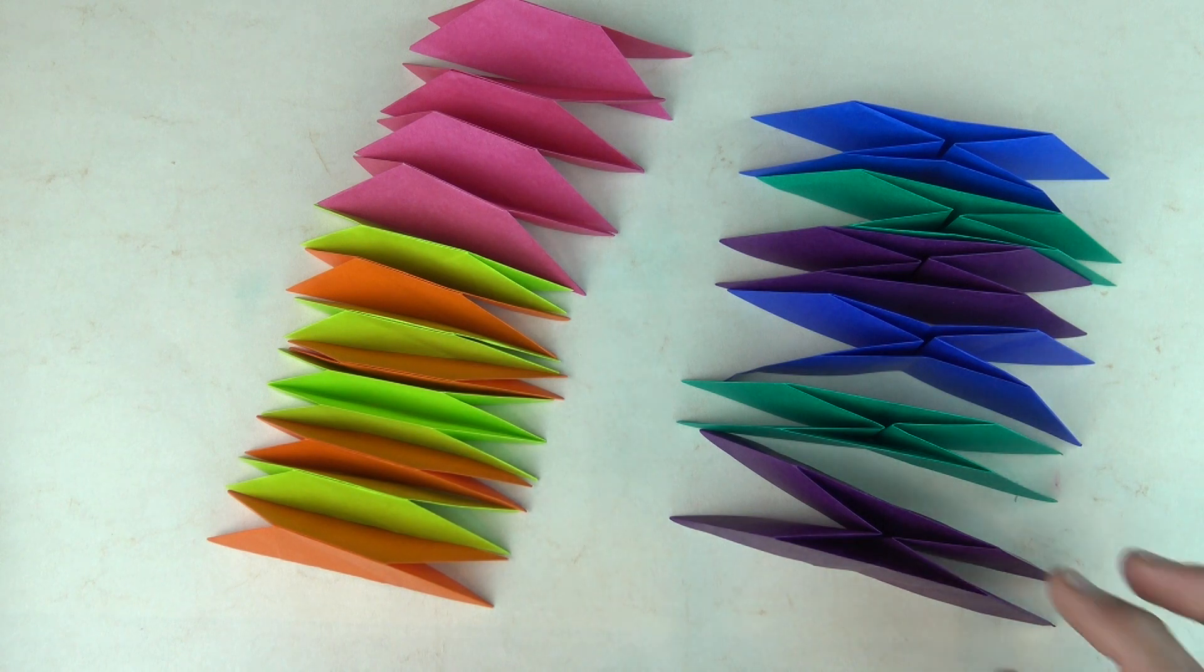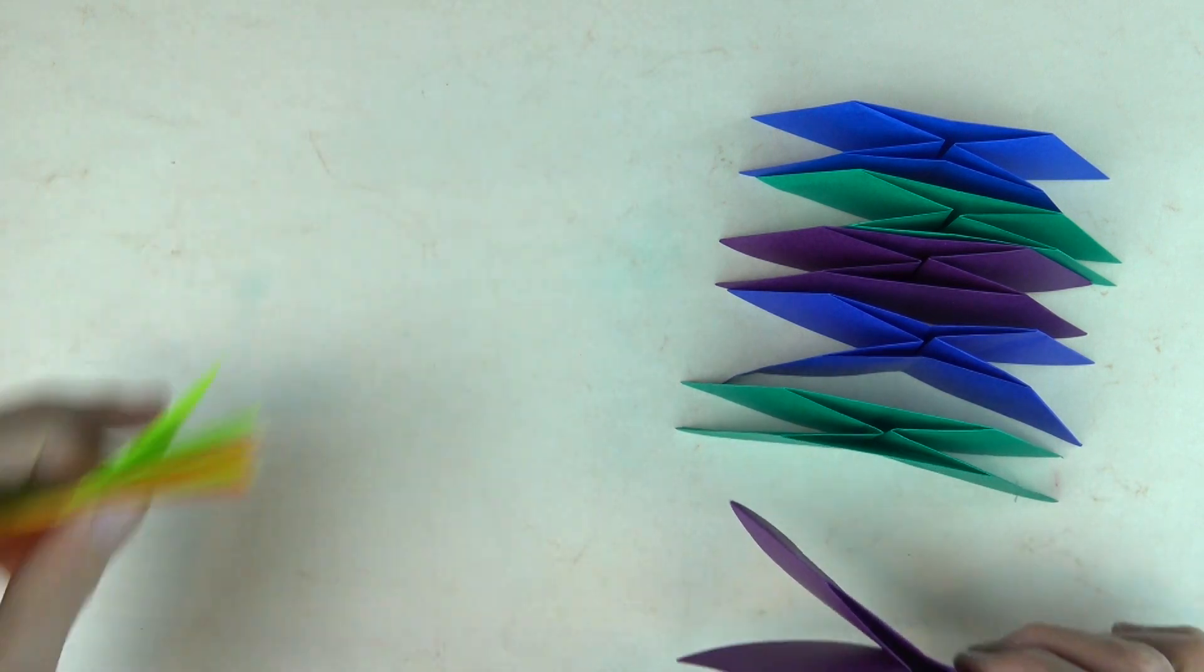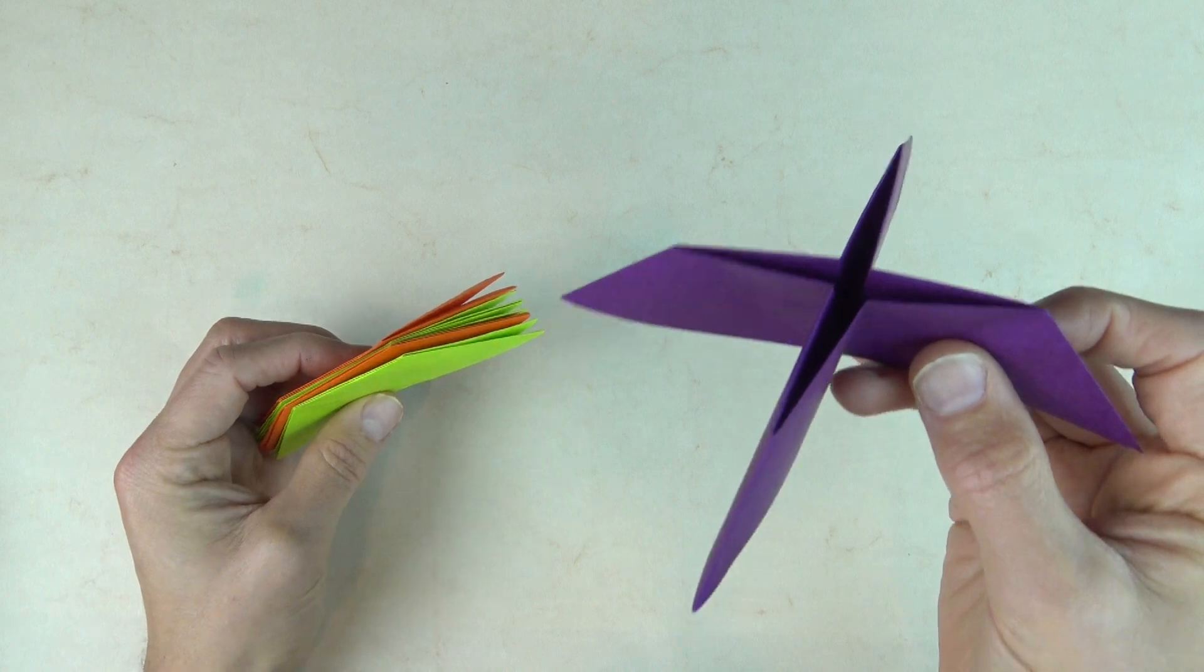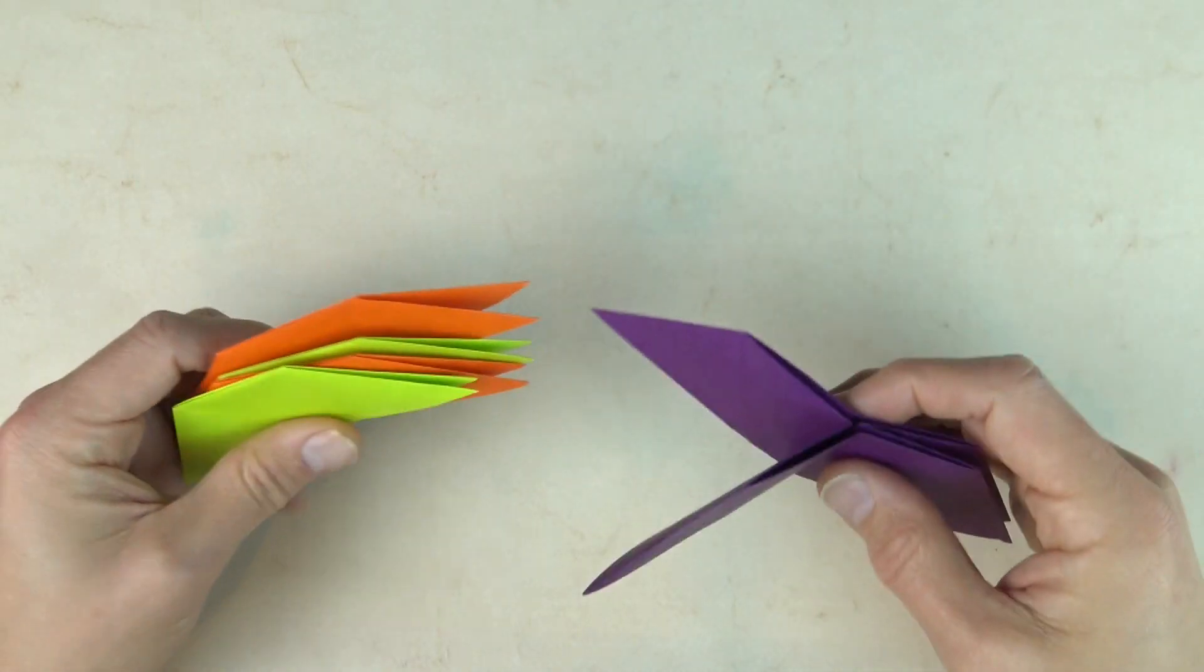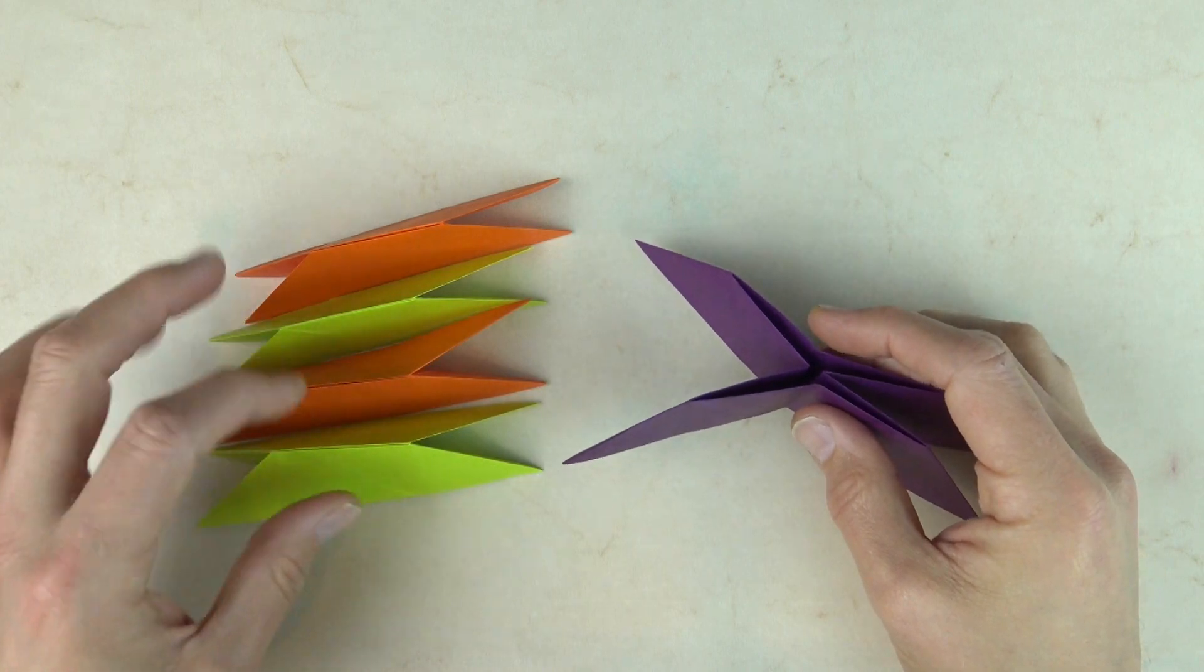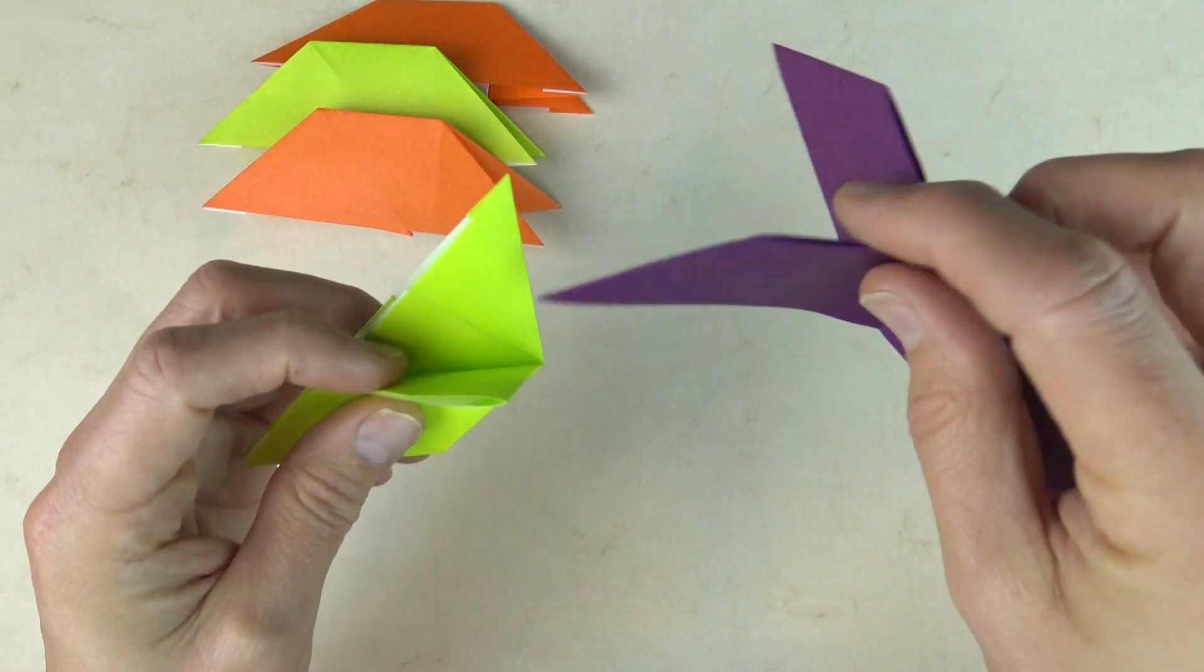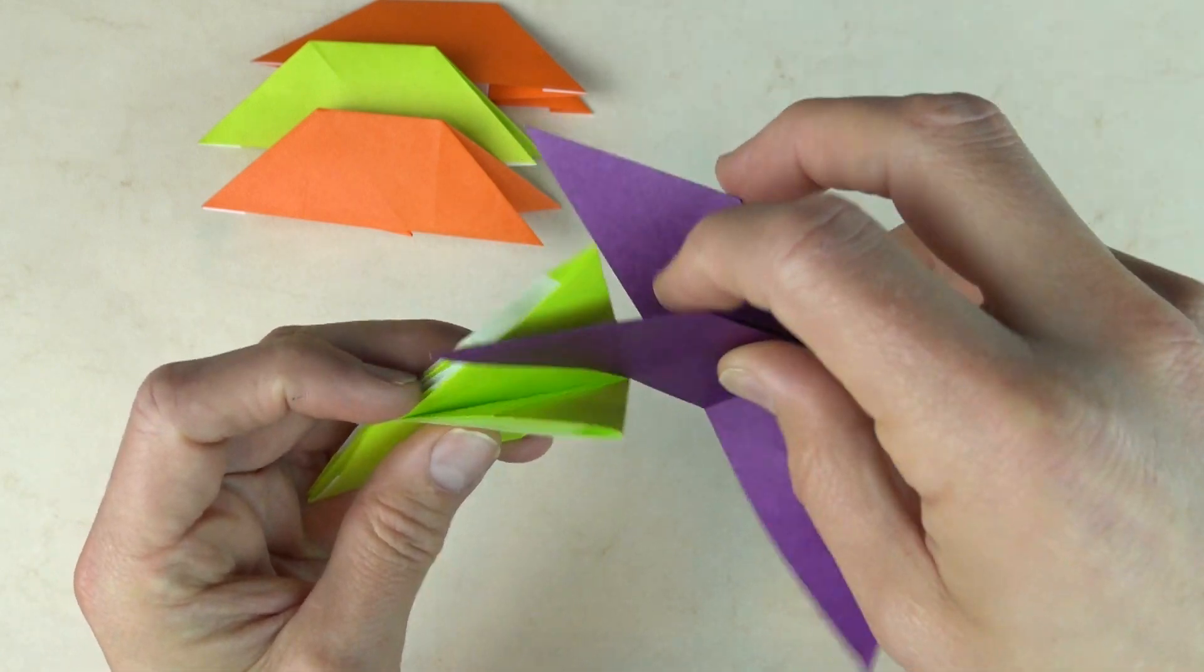And now it's time to assemble them. So grab four edge modules and one vertex module. And we're going to attach the four edges onto the four flaps of the vertex. Turn the vertex module over. And slide one flap of the vertex module into the slot here.